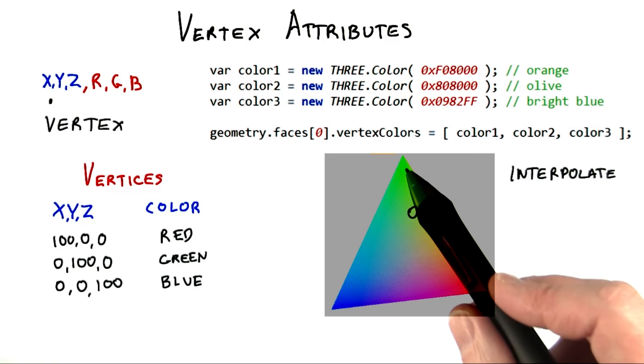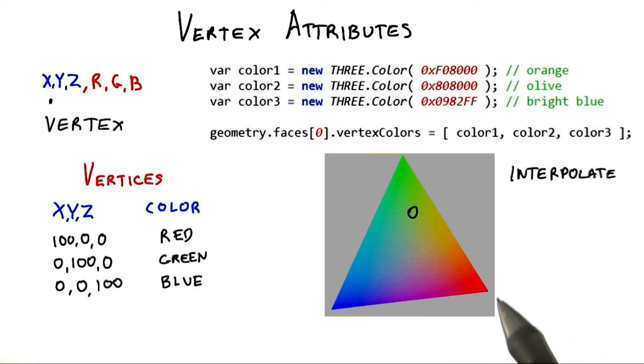For example, this point on the polygon is closest to the green, so gets more of that color, less of the red, and less yet still of the blue. When you're done with this exercise, the results should look like this.